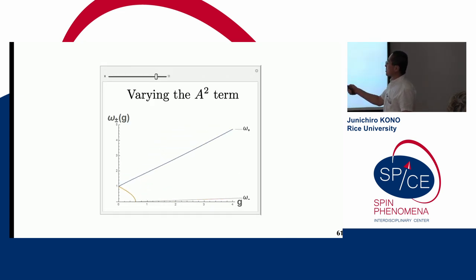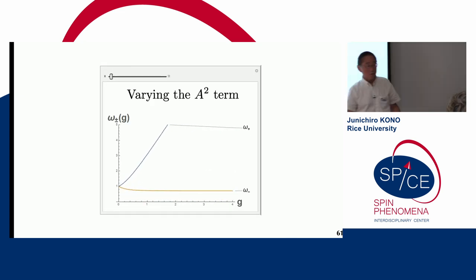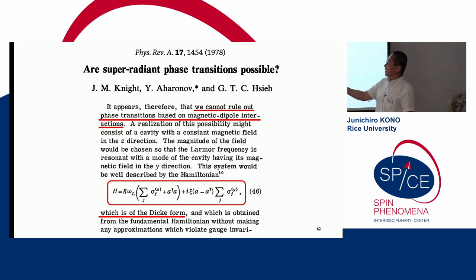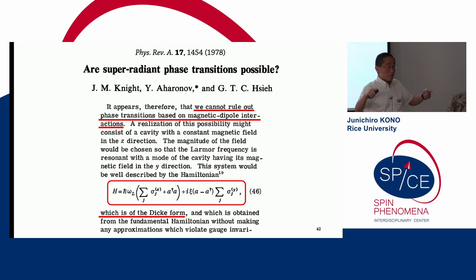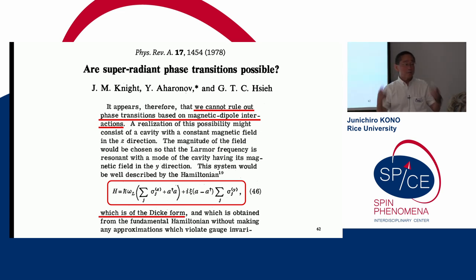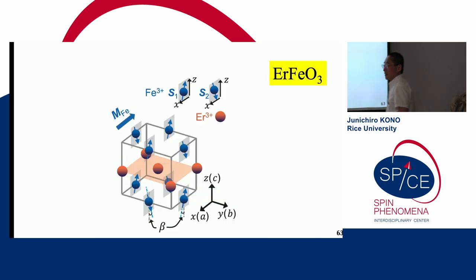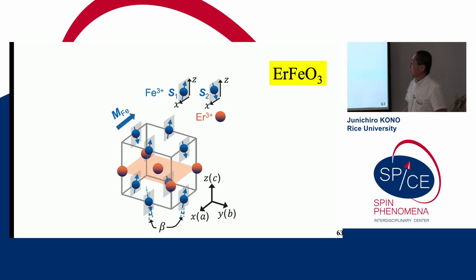How can we eliminate the A-squared term to induce the phase transition? One key idea was already pointed out by Knight in 1978: all the no-go theorems usually apply to electric dipole moments. If we go to magnetic dipole moments and spin systems, we may be able to avoid the no-go theorem. That's why we are using magnets to address these issues.